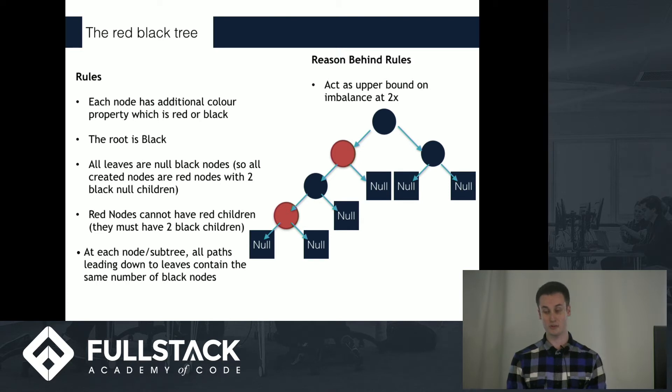When we're looking at a red-black tree, there's several rules. First of which, I think it's important to note that it actually has the same rules as a binary tree, plus some additional ones. So smaller numbers still go to the left, larger numbers go to the right.